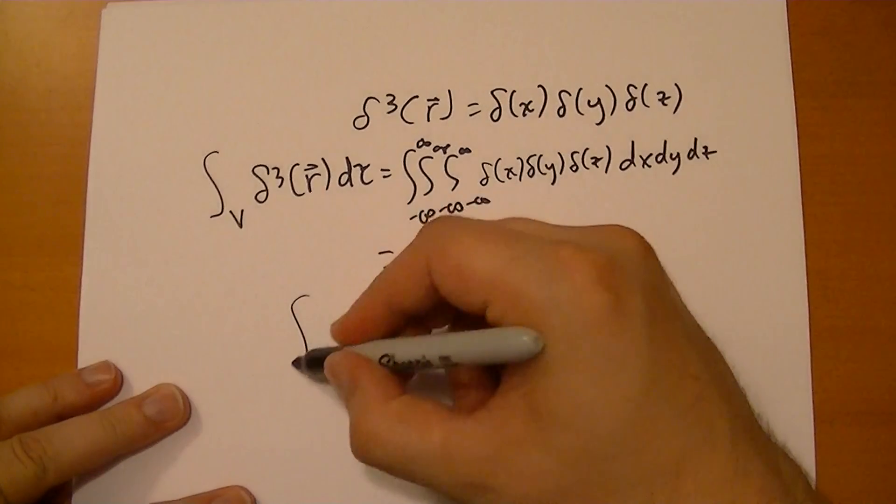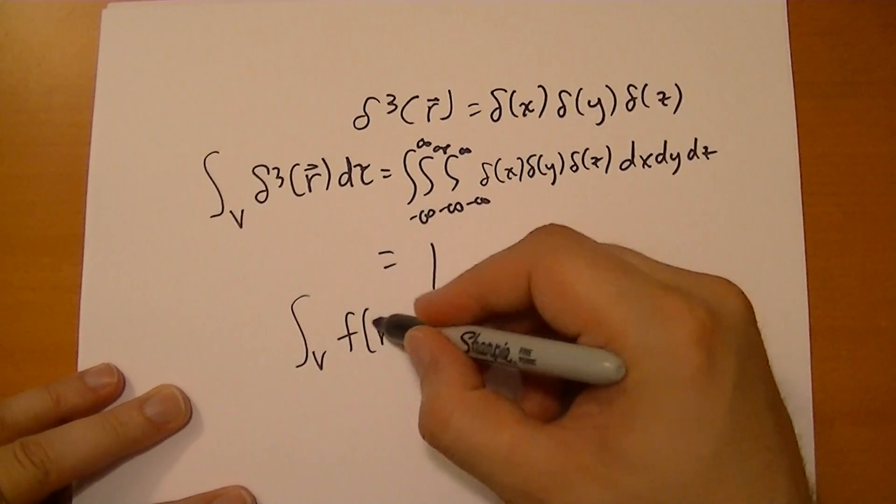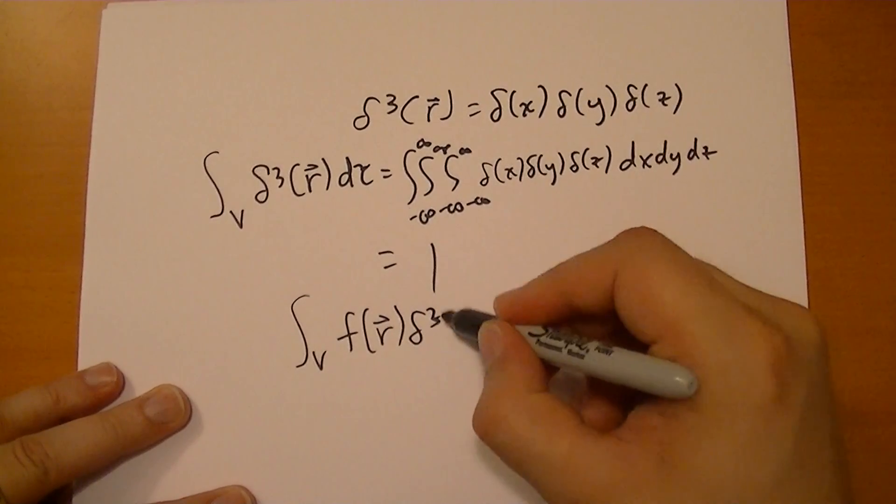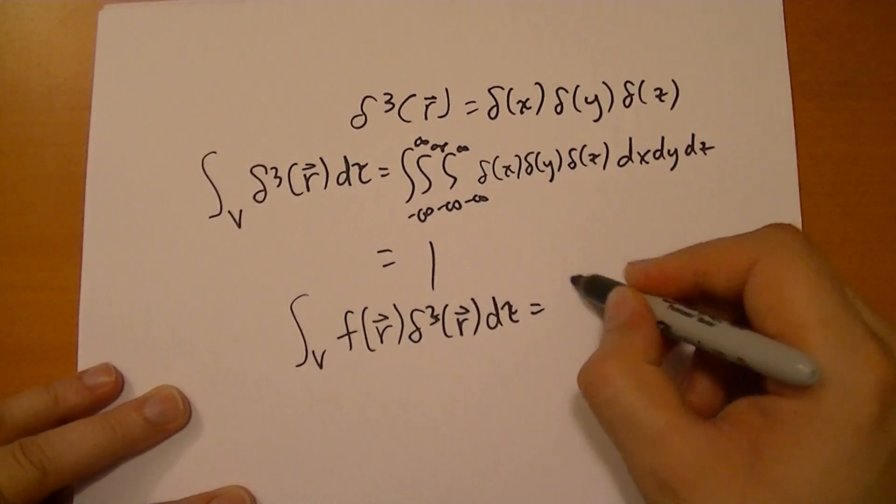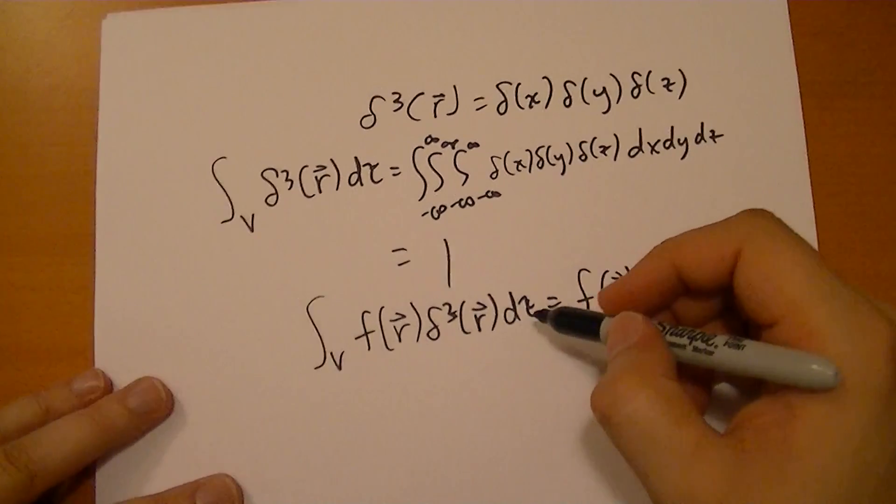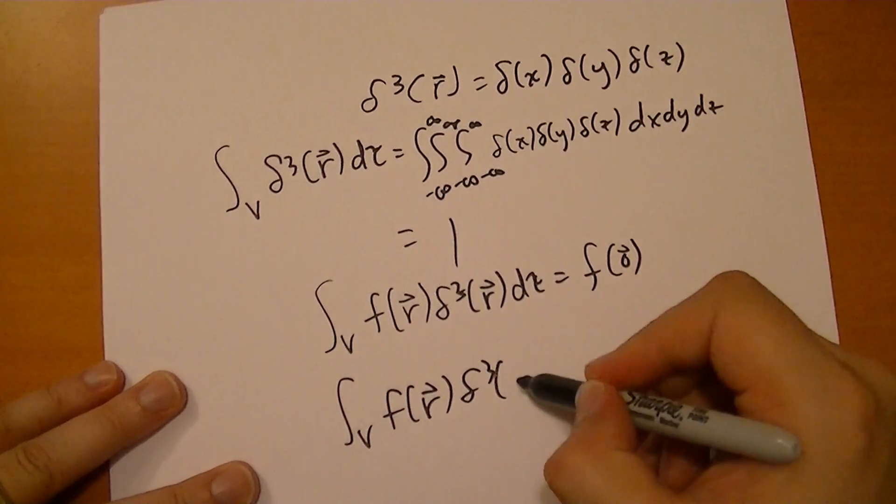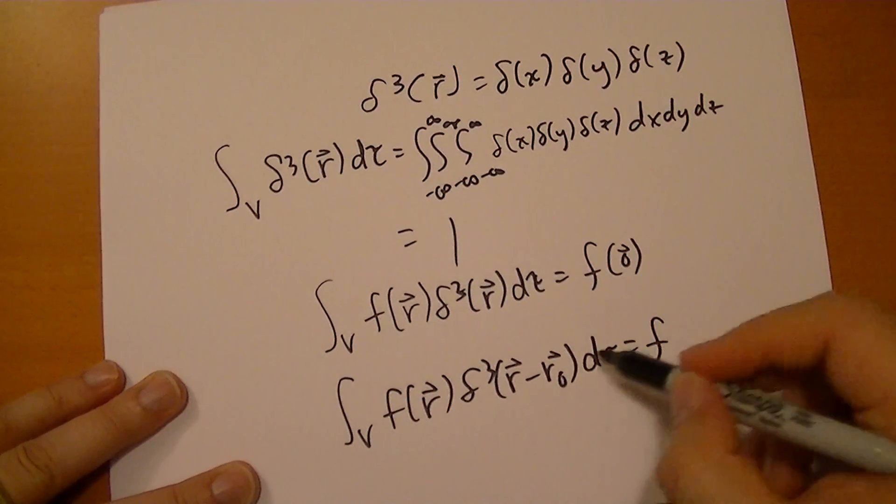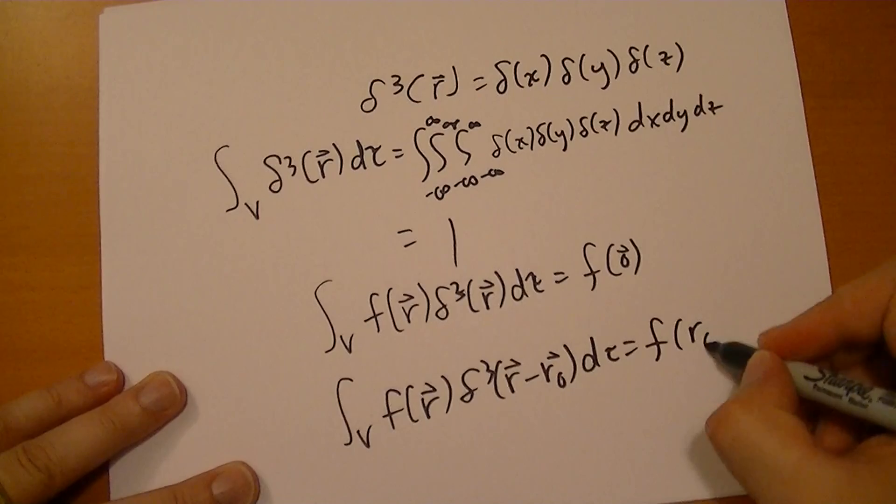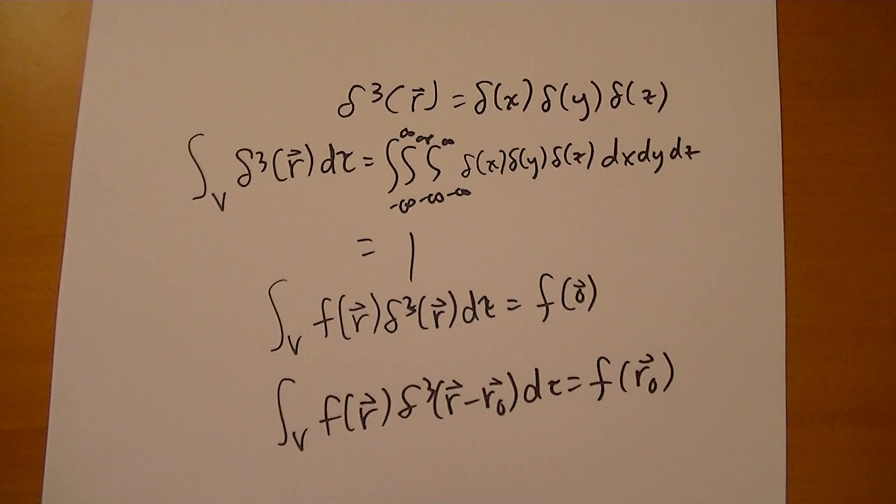And if we do the same thing but we multiply by some scalar field, or even a vector field for that matter, times this δ³ thingamabob, then that's just going to be f(0). And the same token, if we basically offset, like we did earlier, so we start with r and we subtract some r₀, that's going to be equal to the thing that would make this 0, which would be r₀.